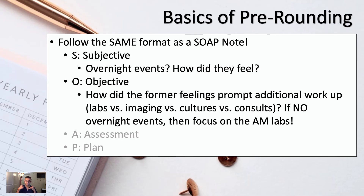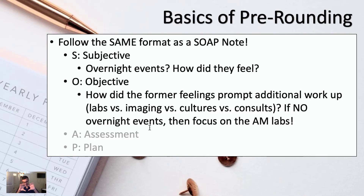The next step is the objective data. If something did happen, what objective data did you collect to figure out what was going on? If someone got worsening shortness of breath overnight, chances are you got a chest x-ray and some labs. If there were no overnight events, the objective data you want to focus on is usually the morning labs. Even if nothing happened overnight, if a patient's white count went up, maybe that's something to focus on — did they start steroids recently, do they have signs of infection, or is it a reactive process from a recent procedure?